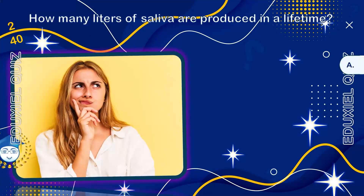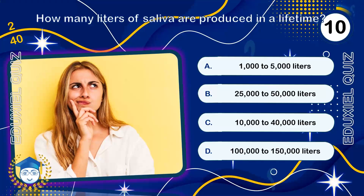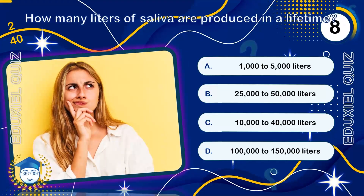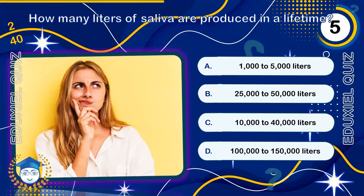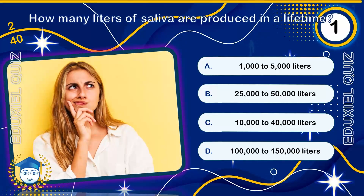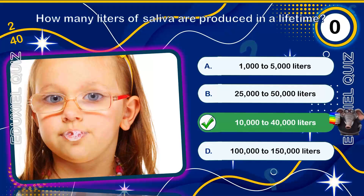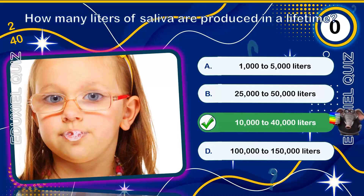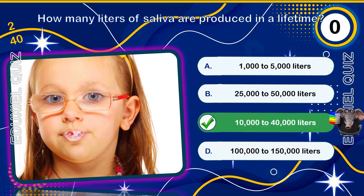How many liters of saliva are produced in a lifetime? 10,000 to 40,000 liters. This staggering amount is enough to fill a medium-sized swimming pool. Saliva is vital for both digestion and protecting the mouth's soft tissues.